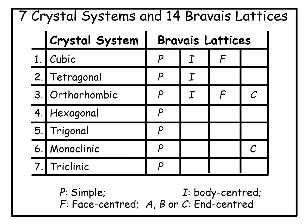When we name the Bravais lattices, we append these symbols to the name of the crystal system. So the Bravais lattices for the cubic crystal system are cubic P, cubic I, and cubic F.